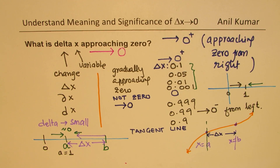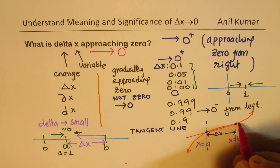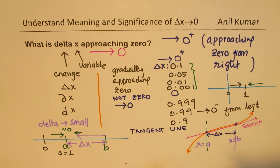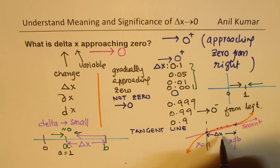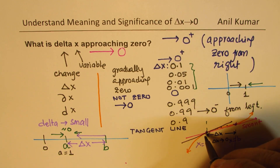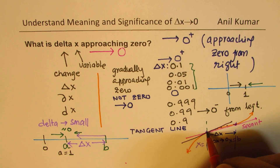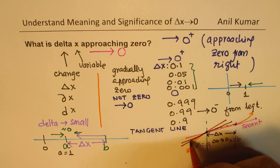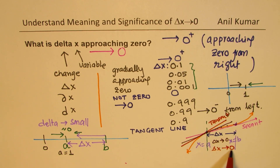If I bring point B closer and closer to A, when I join them I do get a line — this is called the secant line. If I bring this point closer and closer to A from the right side, Delta X is decreasing. So when Delta X is approaching 0, that means coming closer and closer, and finally you get a tangent at the particular point of interest. You get a tangent when Delta X is approaching 0. You could approach from left and right, both sides.